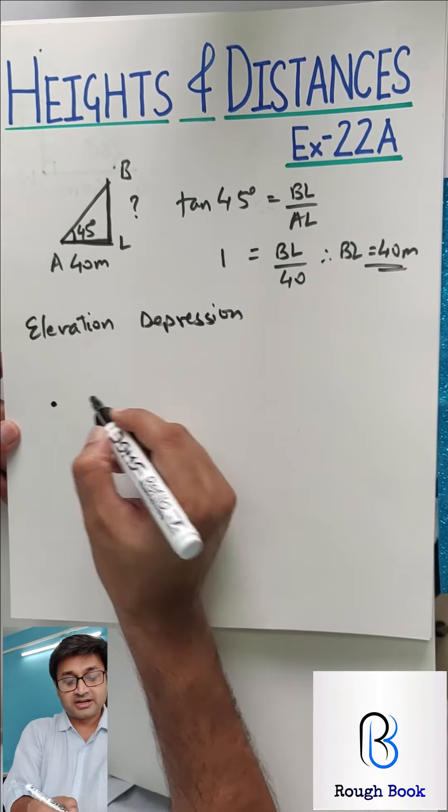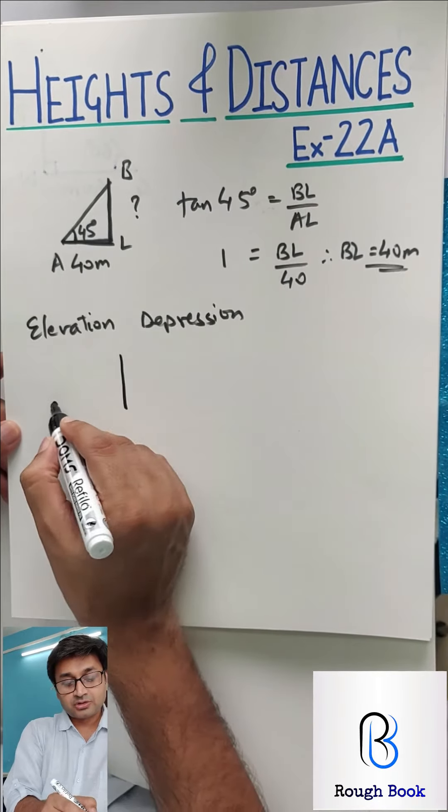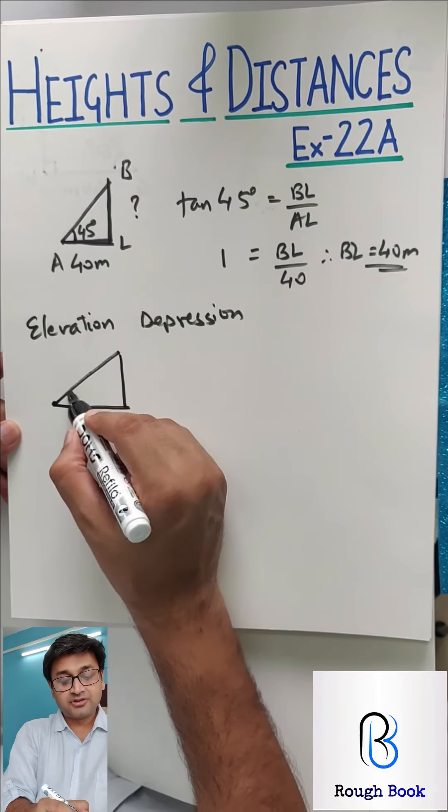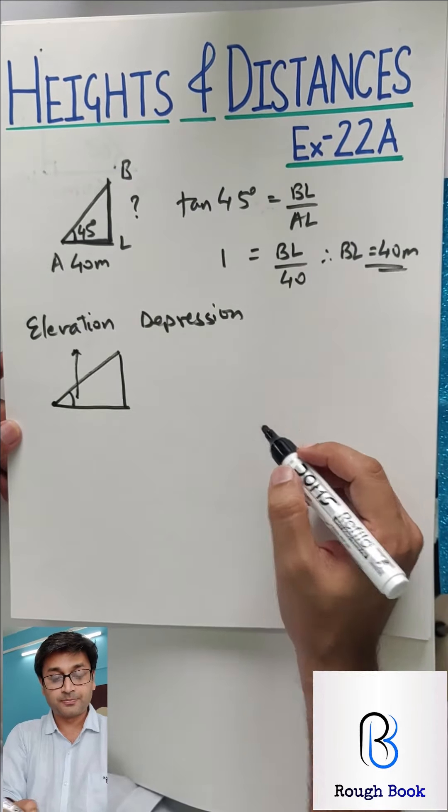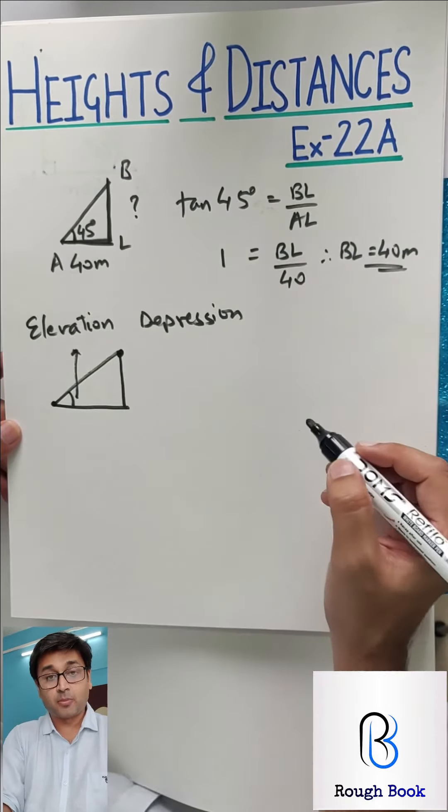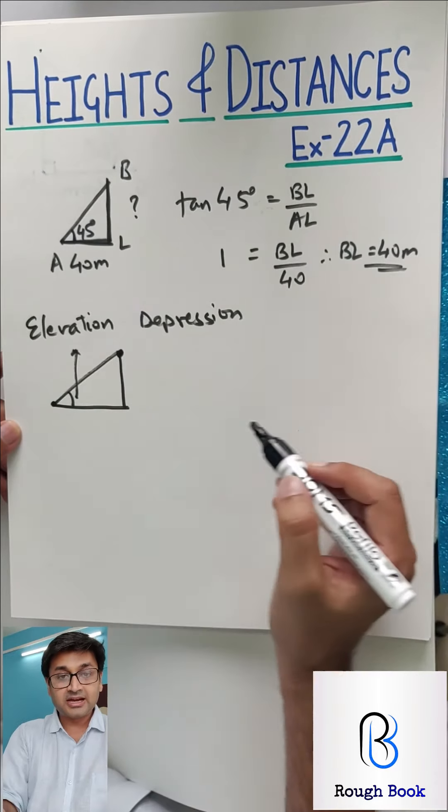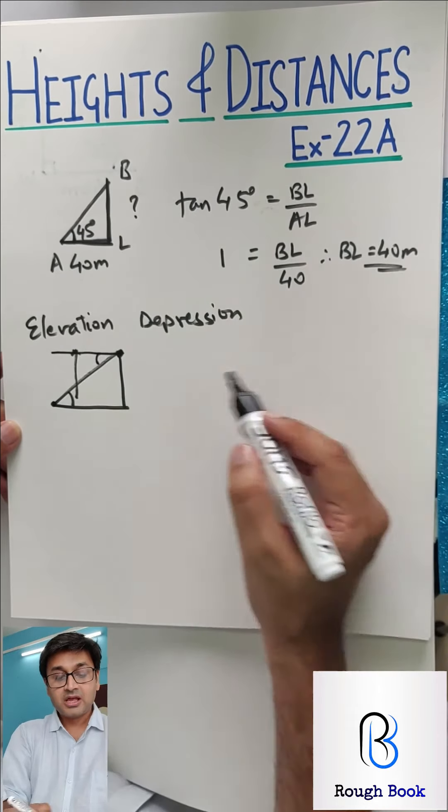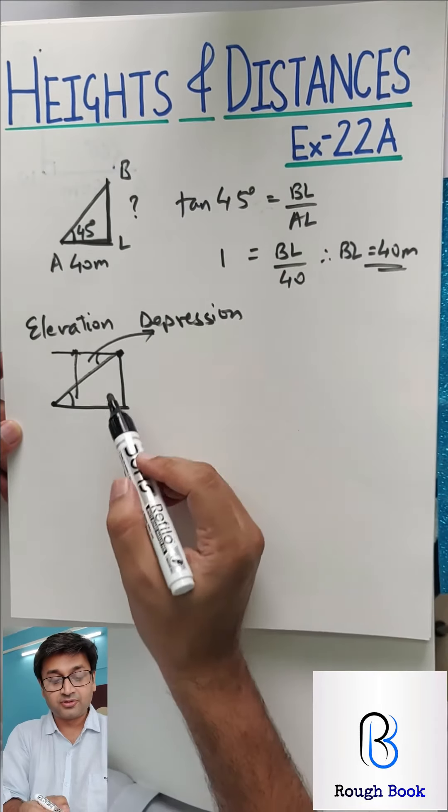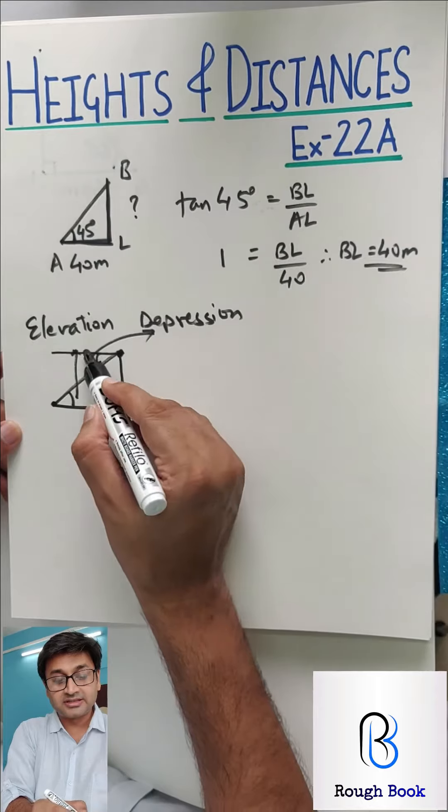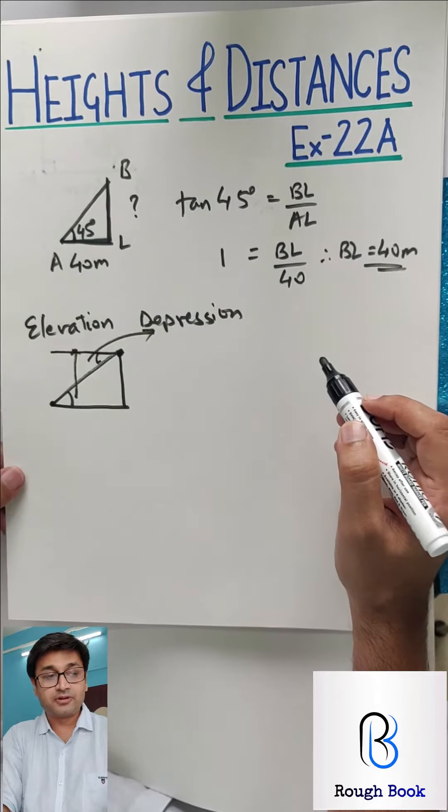Let's say if the person is standing here at this point and he is looking up to a particular thing. The person is standing on the ground. This angle which he makes is called the angle of elevation because he is looking on top. Let's say this is the building and someone is on the top of the building. And then that person looks down. Then this angle that he creates with the horizon is called angle of depression.